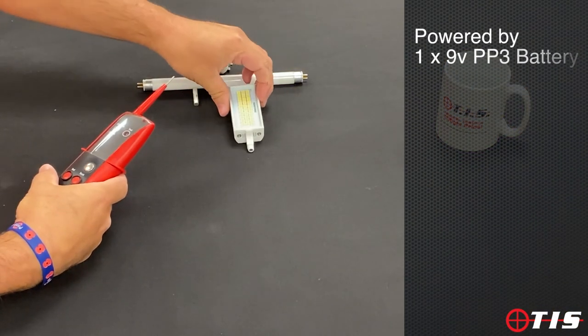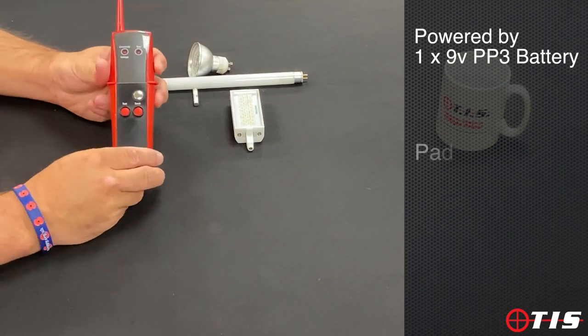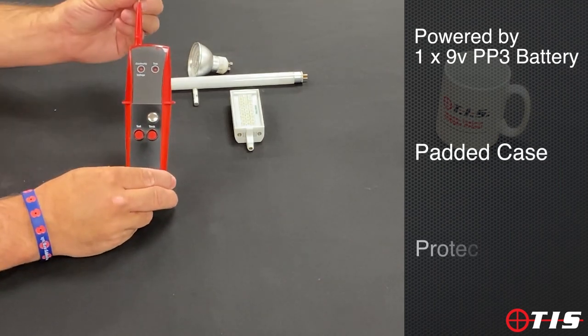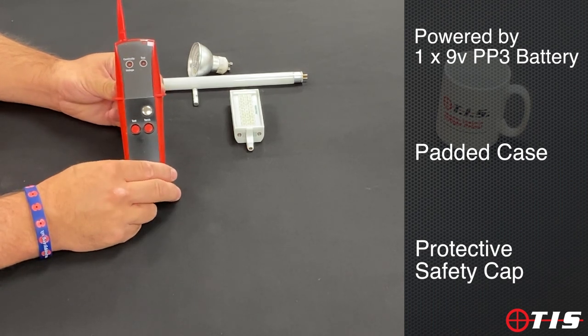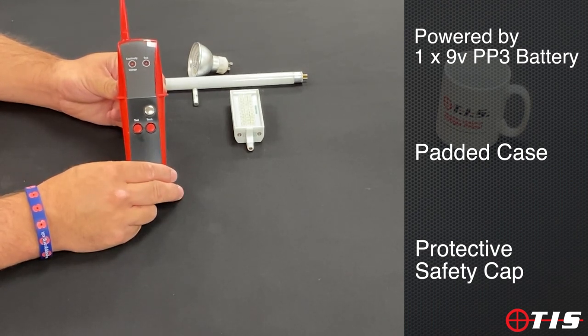It takes a 9 volt battery and comes in its own padded case with a safety cap on top. That's our TIS 1040 lamp tester and control gear tester. Thanks for watching.